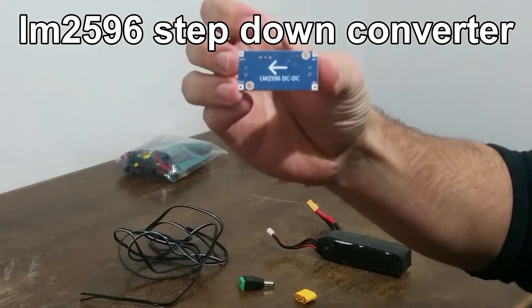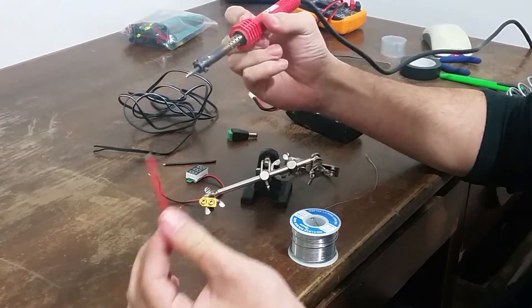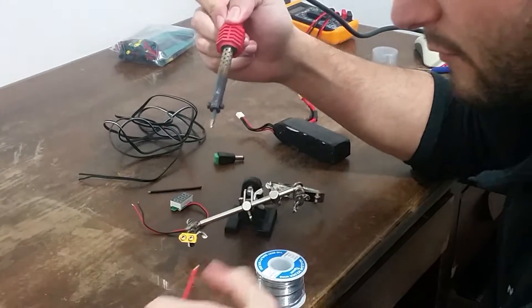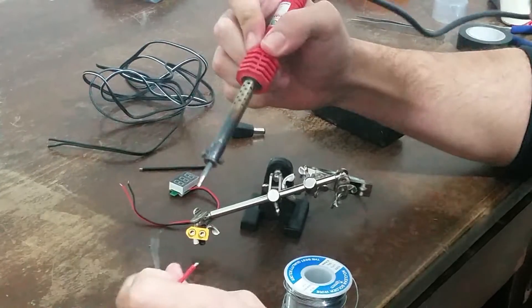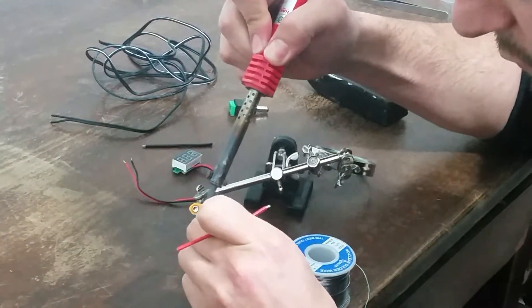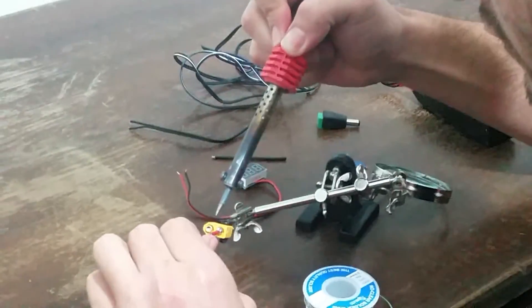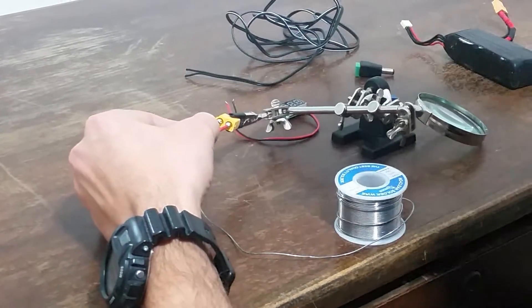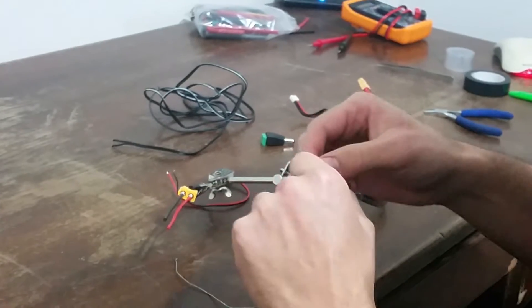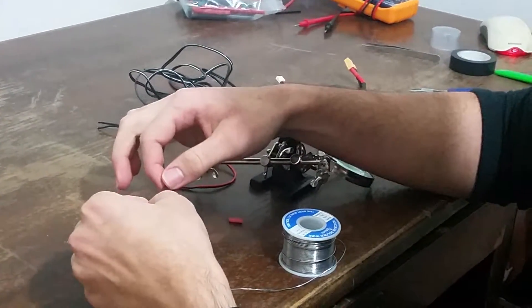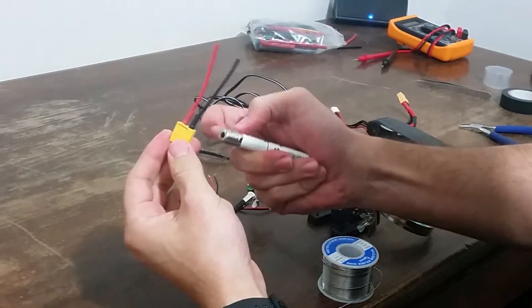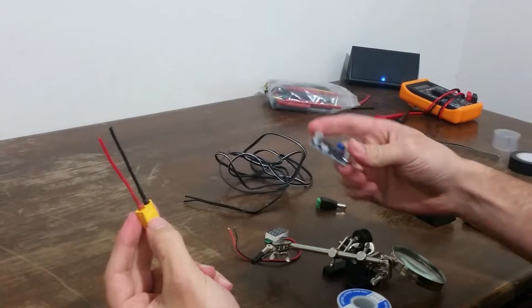It's a LM2596 DC to DC step-down converter. What I'm going to do is I'm going to connect just a spare piece of wire to the XT60 so we could connect it to the step-down converter. I'm just going to put some solder and I'm going to put some solder on the XT60 itself and let it cool down. I'm going to put a little bit of heat shrink on each of the wires, melt it down, and this part is ready.